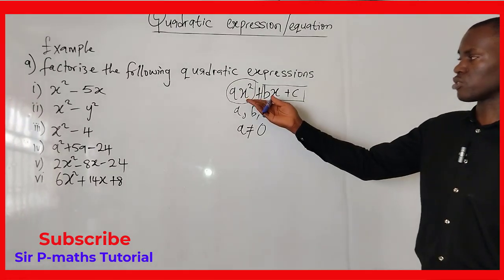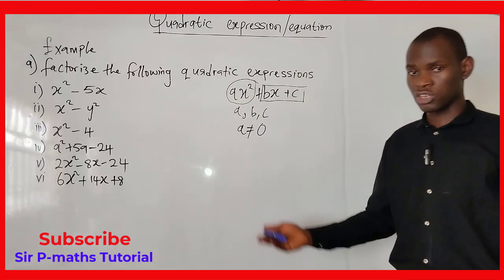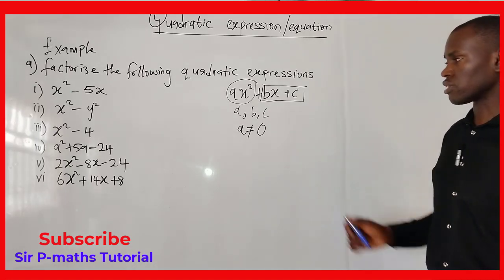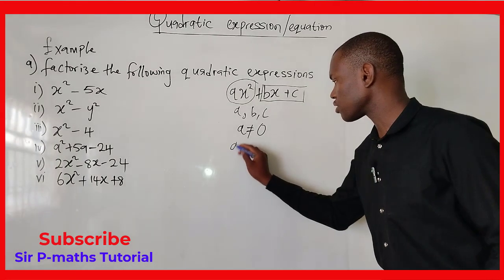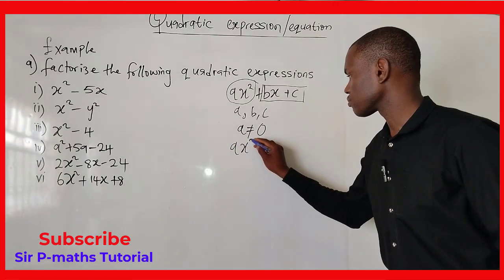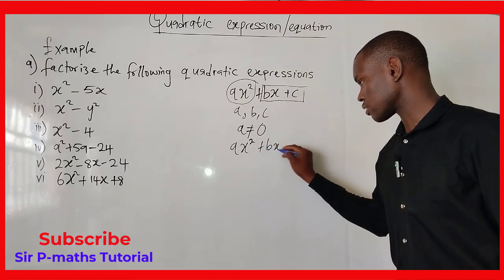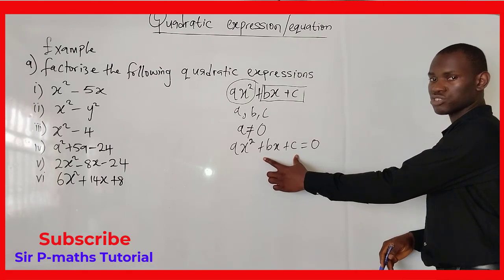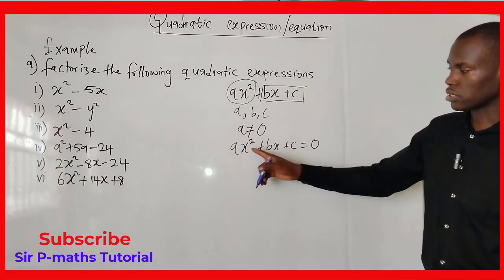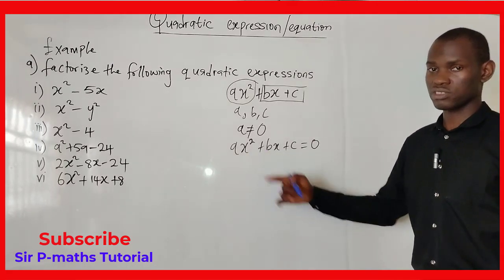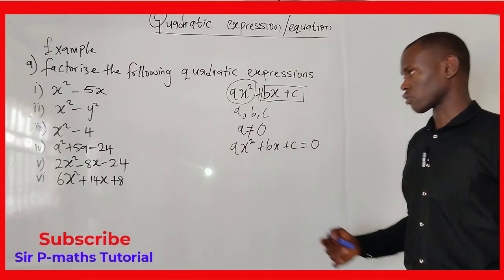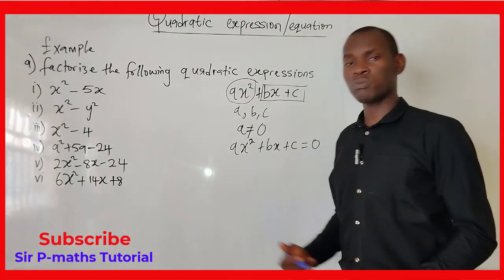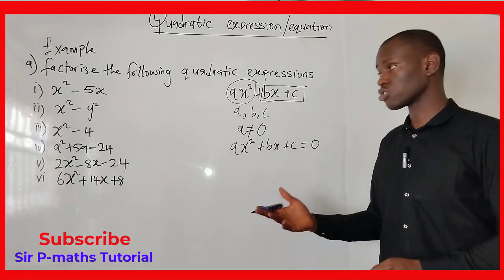To turn a quadratic expression into an equation, all I need to do is introduce an equality sign and a zero to the right-hand side. So I'll have ax² + bx + c = 0. This is now a quadratic equation. The x, which is the variable of the equation, still has a square.